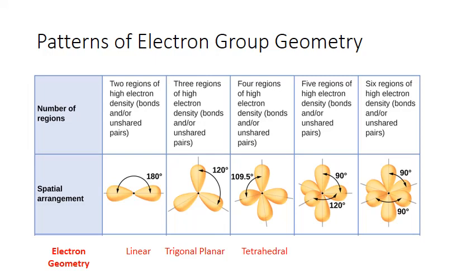It is possible to have five or six electron groups on a central atom, particularly for those hypervalent molecules that can accept more than eight electrons. If you have five regions of high electron density or five electron groups, you actually end up with two different bond angles. The shape itself is called trigonal bipyramidal.